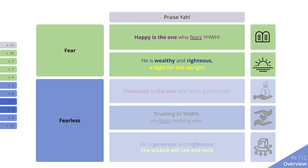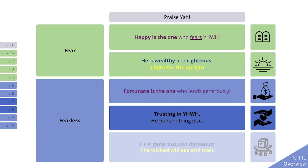The key word again is fear, but here the person fears nothing else when he trusts in the Lord. He is first introduced as generous, which is one characteristic of the one who fears nothing else. When he trusts in the Lord, he's both generous and righteous. This results in blessing for the upright, but the wicked see and melt in fear.